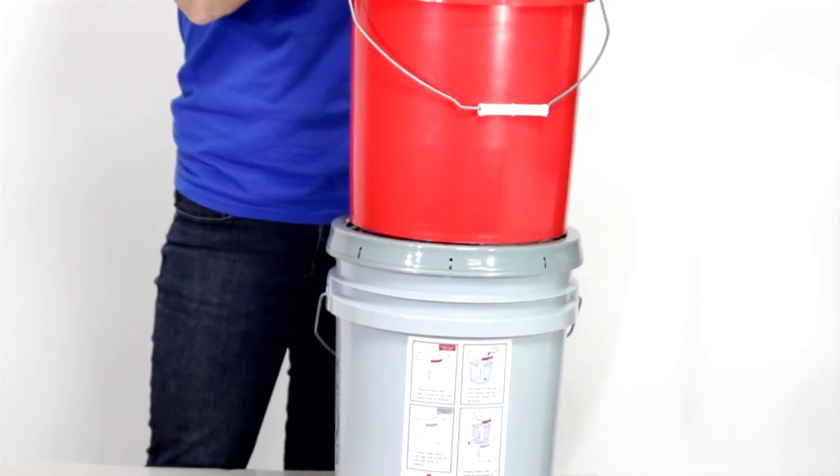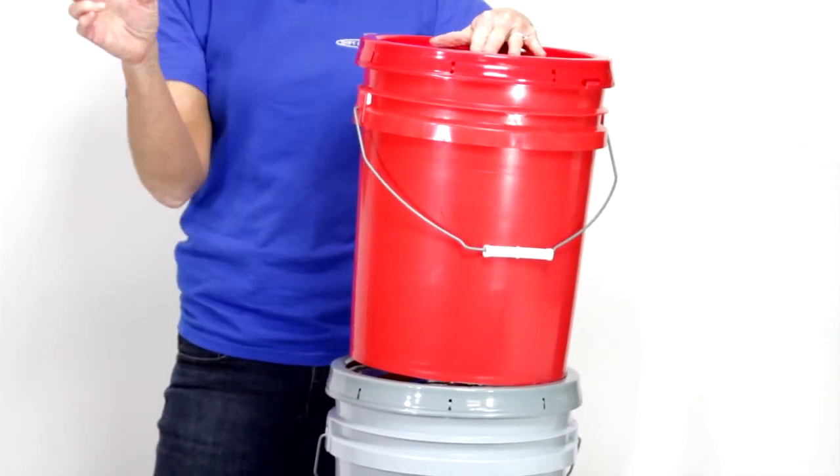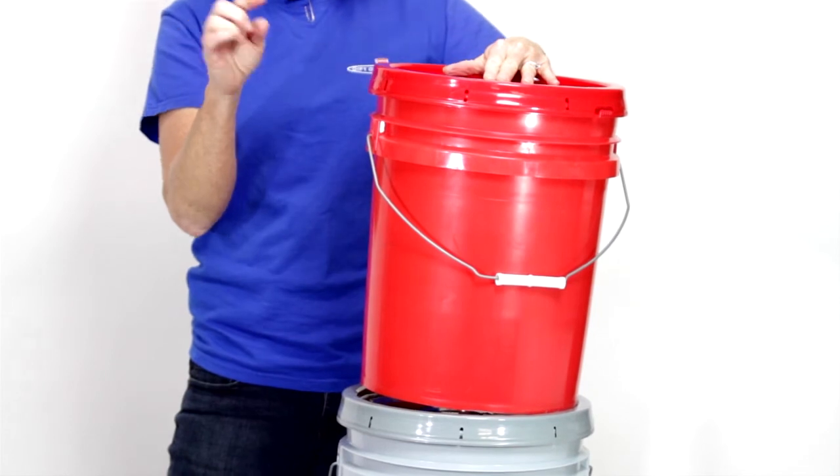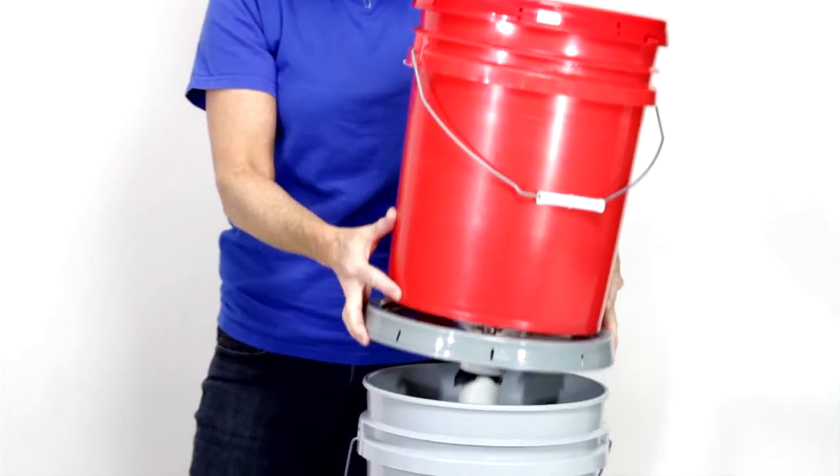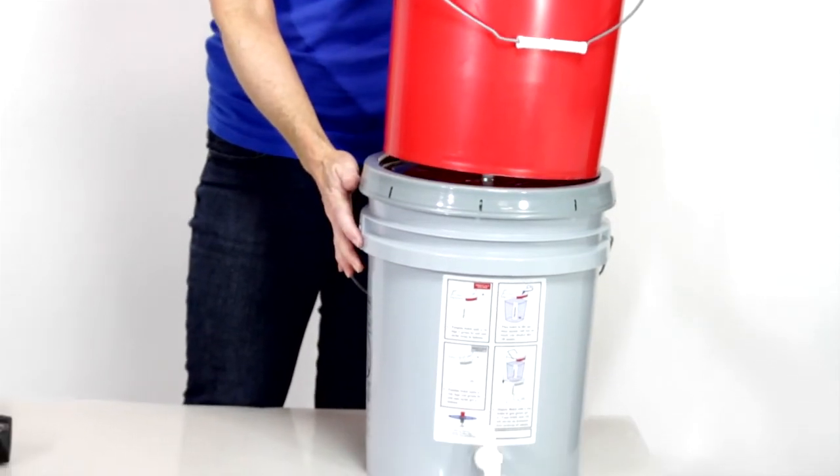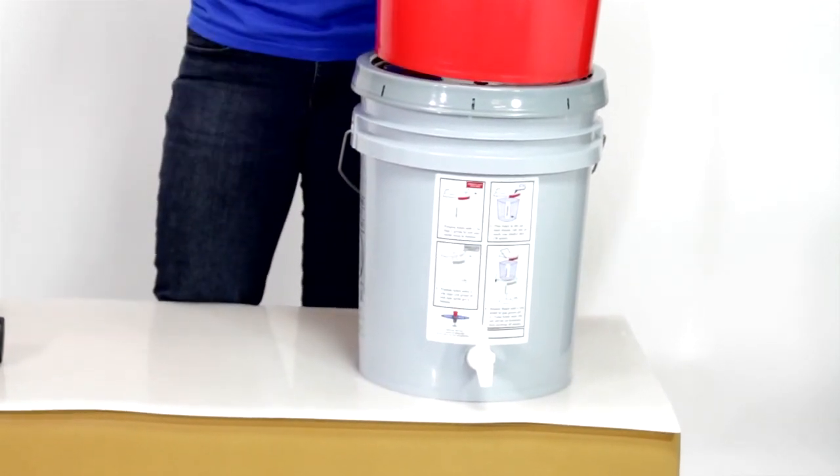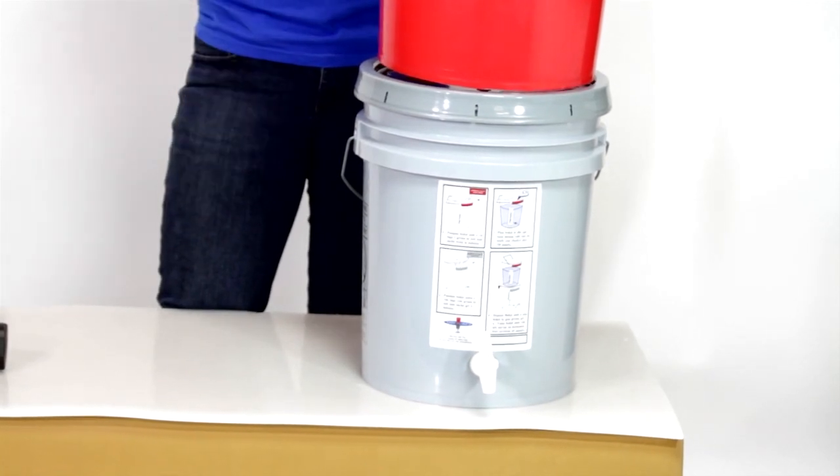The weight of the water will hold it down and open up that check valve. The water then flows through the string filter and down into the carbon filter, then down into the safe storage container. They access the purified water through the spigot. That's how you assemble the Gift of Water household water treatment system.